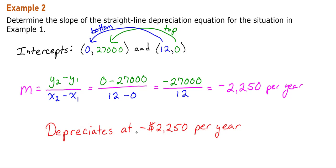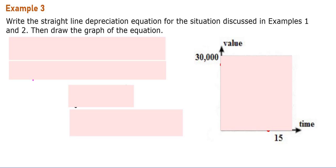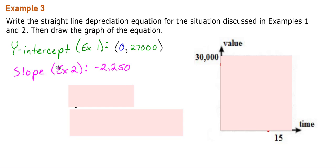That's the slope for our equation. In the next step, we're going to use this slope and our intercept to write our equation. We know that our y-intercept is (0, 27000) and our slope from example 2 is negative 2,250. We want to pull out our slope-intercept form that we've used in the past.